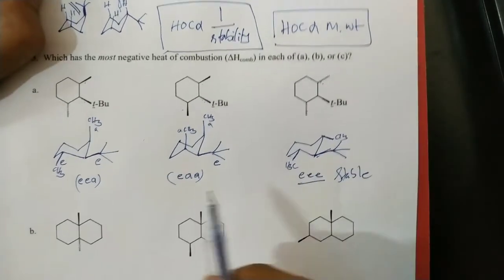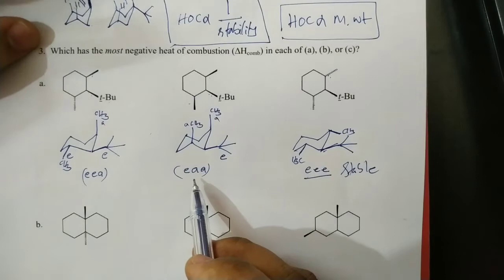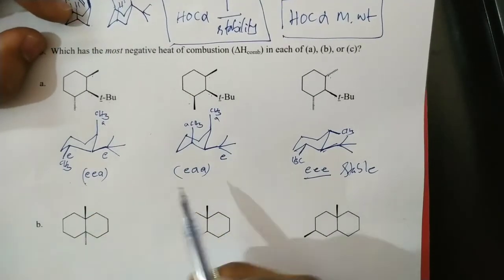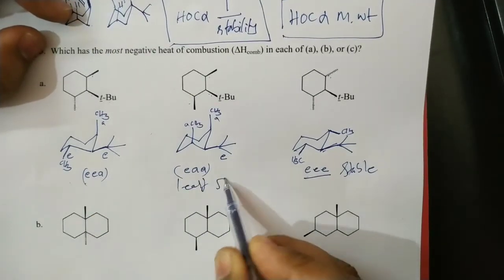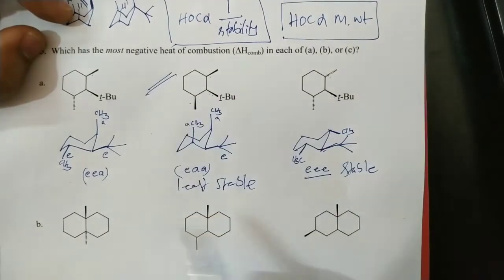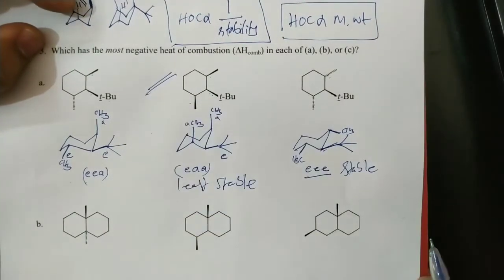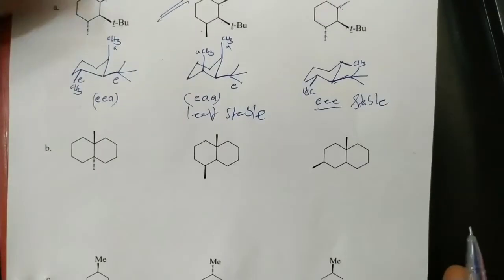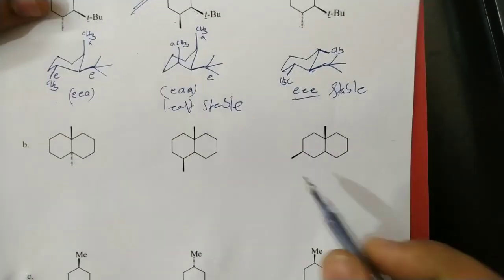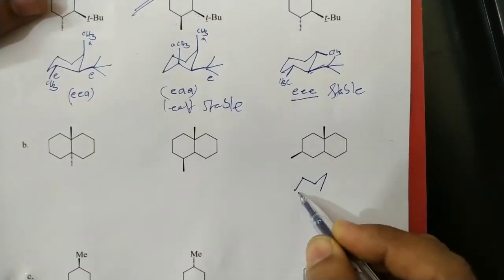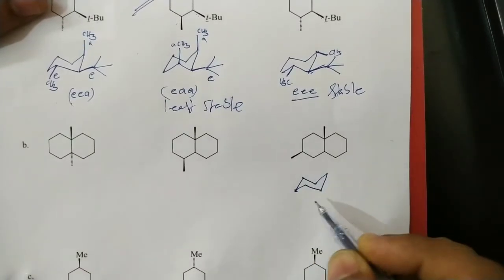The compound with two groups in axial positions is the second one — it is the least stable. The least stable compound has the highest heat of combustion, so the second compound has the highest heat of combustion. Moving to one more example of the decaline type compound.